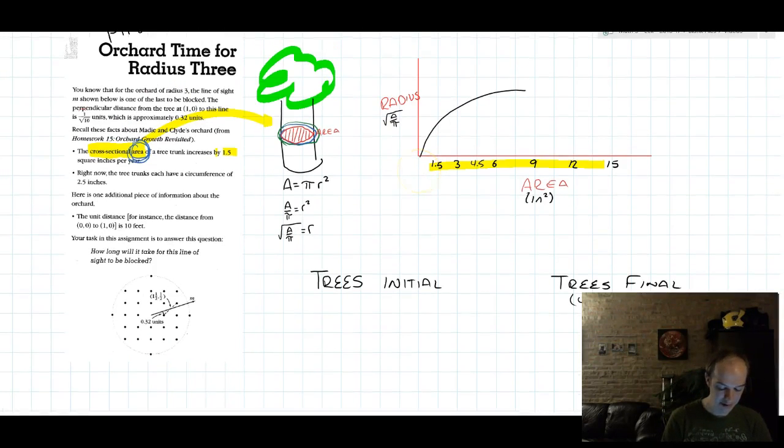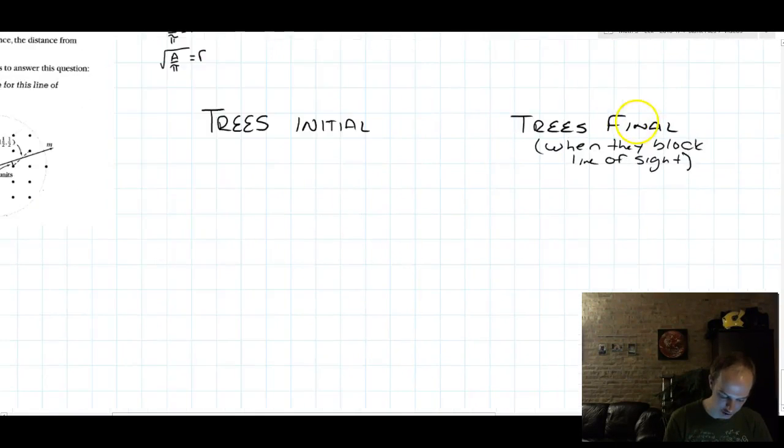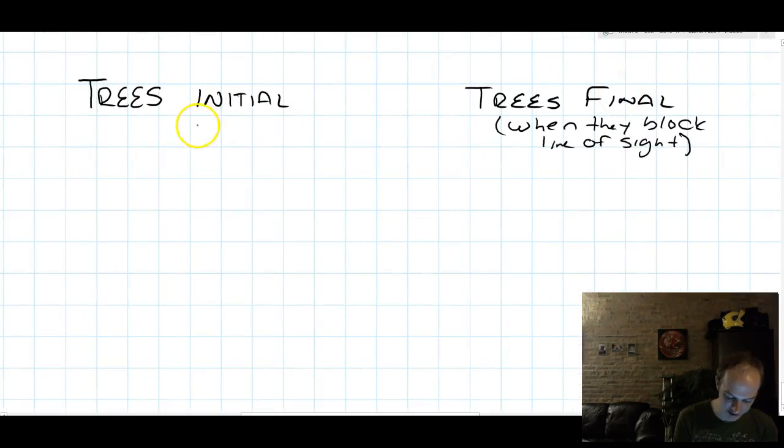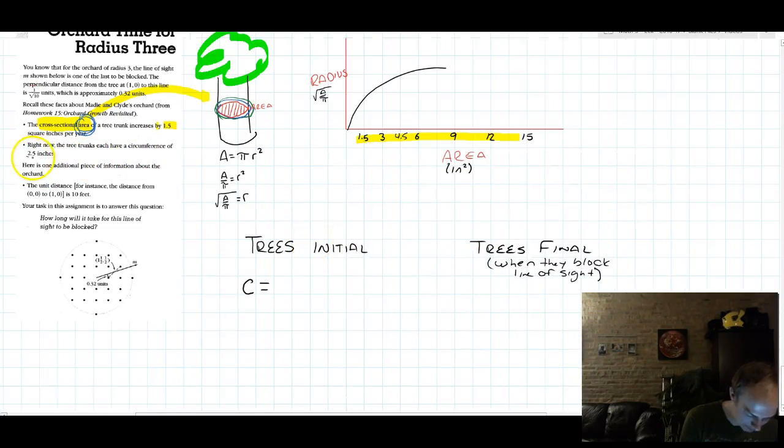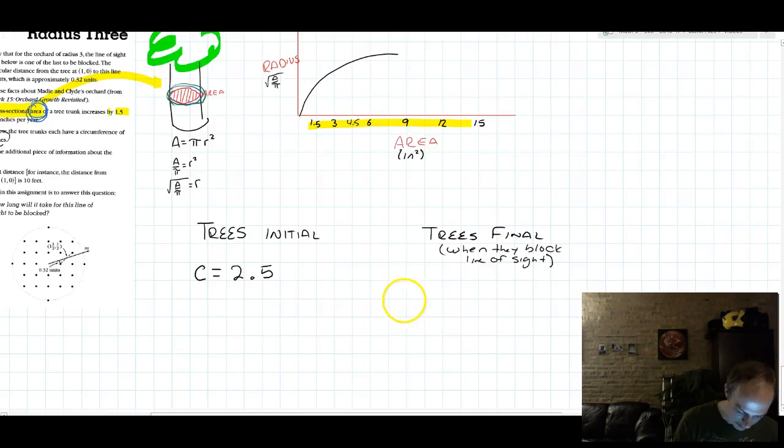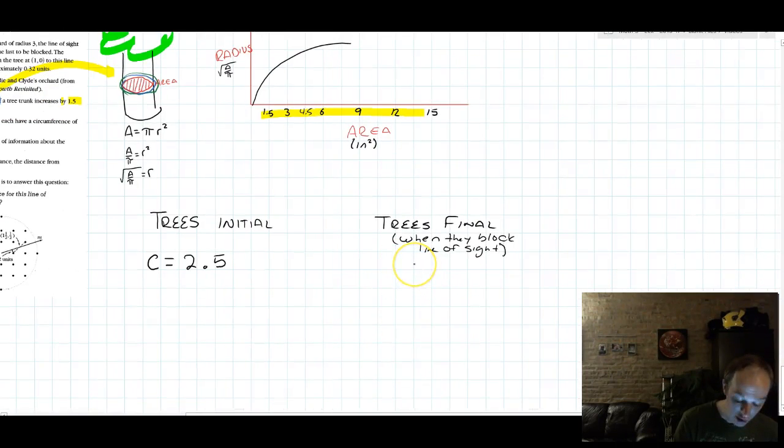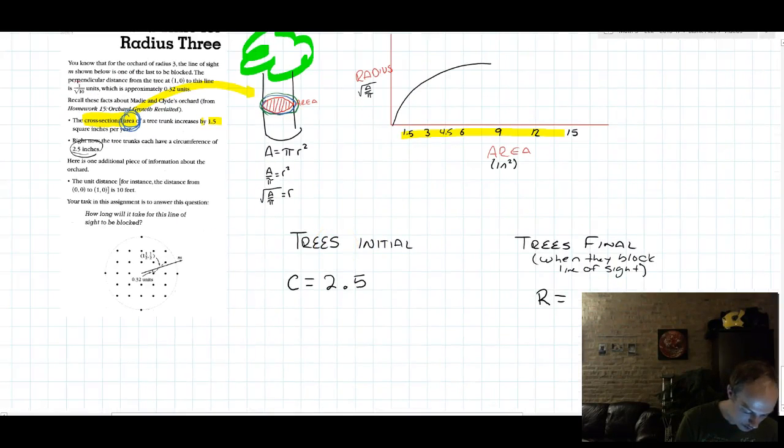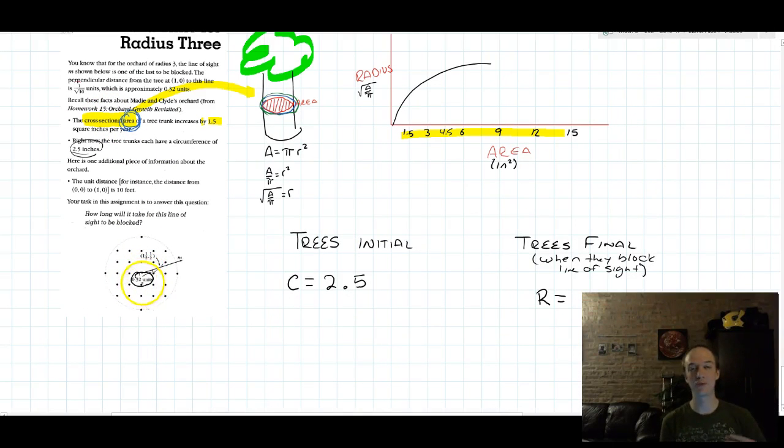To approach this problem, we need to think about the trees at two points in time. I've been calling these the initial times and the final times. So I'm going to start making a little chart with some information about the trees initially and the trees finally. Now these trees initially, it's given that they have a circumference of 2.5 inches. The trees finally, we don't know what their circumference is, but we do know that their radius is 0.32 units. That's what you found in the previous video.